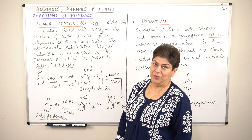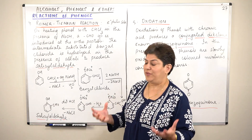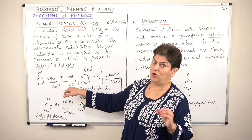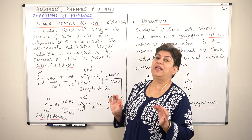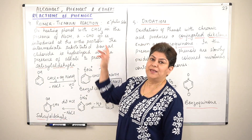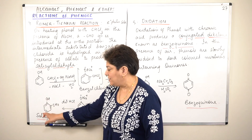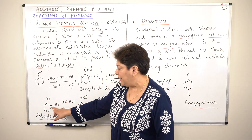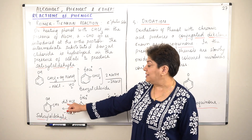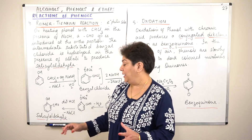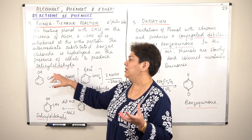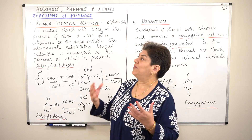In the Reimer-Tiemann reaction, we start with phenol. When phenol reacts with chloroform and sodium hydroxide, it results in the addition of an aldehydic group at the ortho position — that is, a CHO group is added at the ortho position. The compound formed is known as salicylaldehyde. This addition of the aldehydic group at the ortho position with the help of chloroform and aqueous sodium hydroxide on phenol is known as the Reimer-Tiemann reaction.